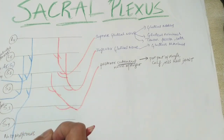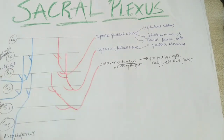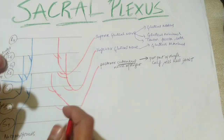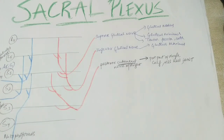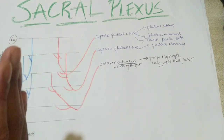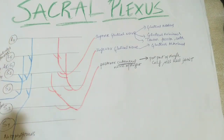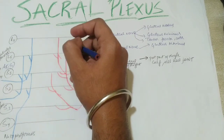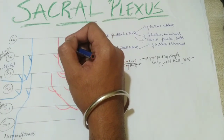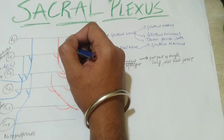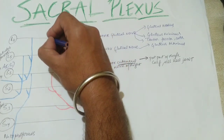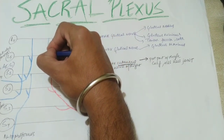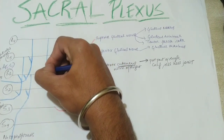Now let's see the sciatic nerve, the largest nerve of the sacral plexus. The sciatic nerve has two divisions: one fiber comes from the dorsal division forming the common peroneal or fibular branch, and one fiber comes from the anterior division.